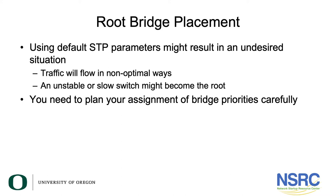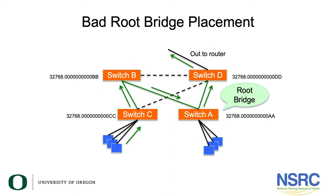Now let us look at root bridge placement. Using default STP parameters might result in an undesired situation where traffic flows in non-optimal ways, or an unstable or slow switch might become your root bridge. So you need to plan your assignment of bridge priorities carefully. In this example we have four switches — the distribution switches are B and D at the top, and switches A and C are your edge or access switches where you connect end nodes. The bridge IDs are given in the diagram with default priorities, and the MAC address is what picks the root bridge.